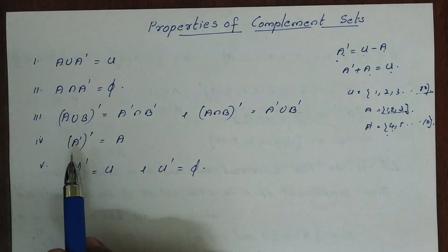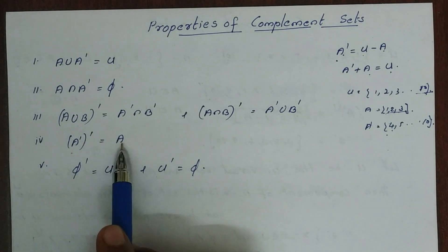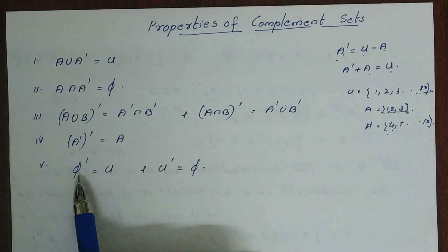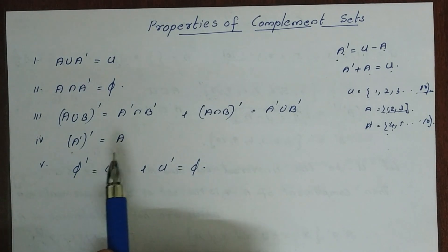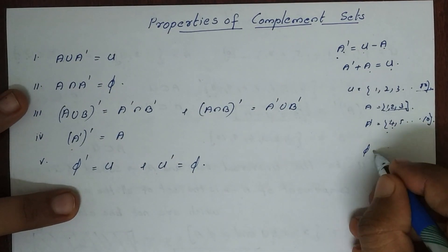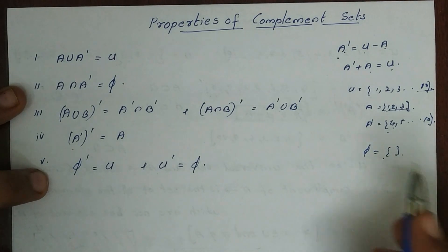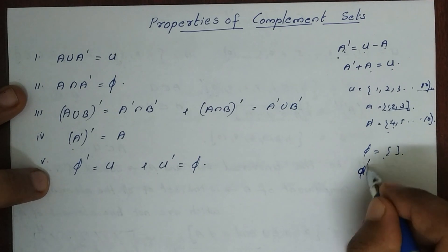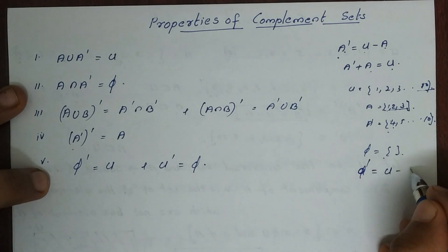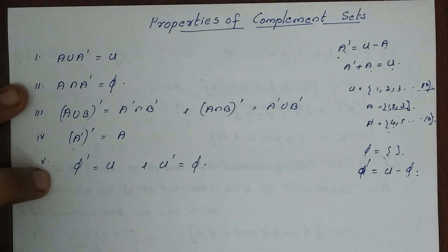Complement of complement: A complement complement is A. And the null set complement is U — the universal set. The complement of U is the null set.